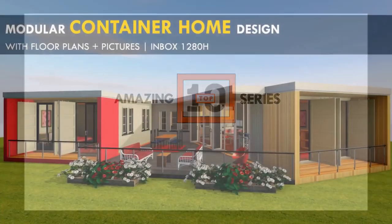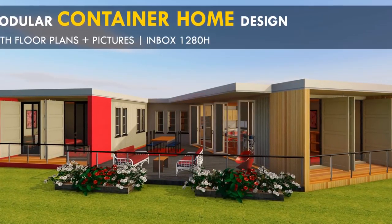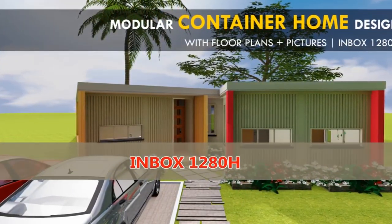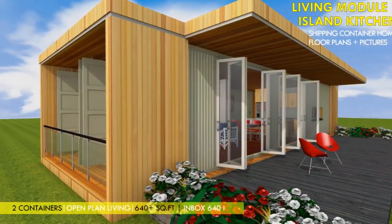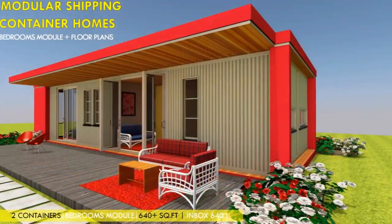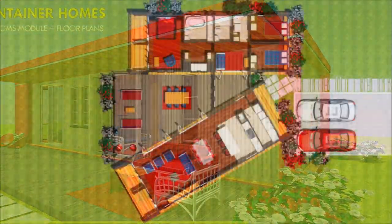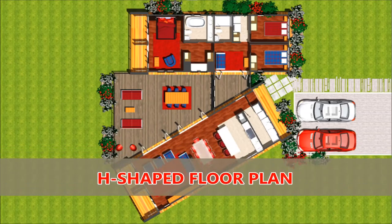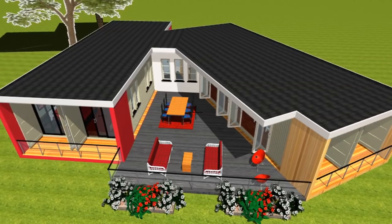In today's video, we explore our new Inbox 1280H. Inbox 1280H is a modern modular house designed by combining the Inbox 640i living module and the Inbox 640b bedrooms module into an H-shaped floor plan. The space in between the two modules serves as a family terrace to the house.